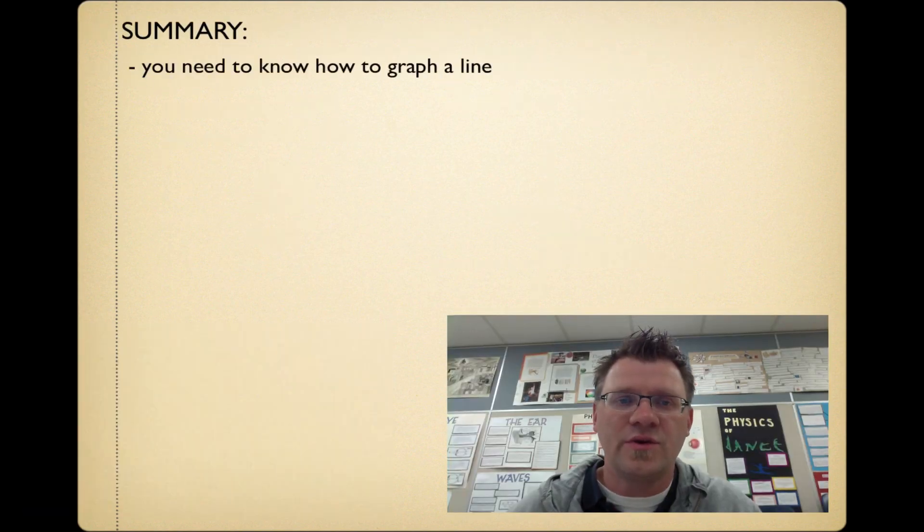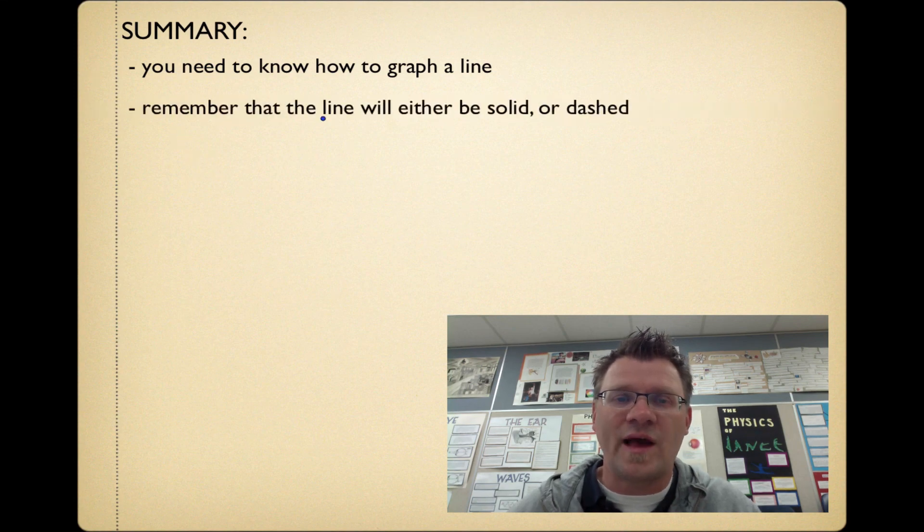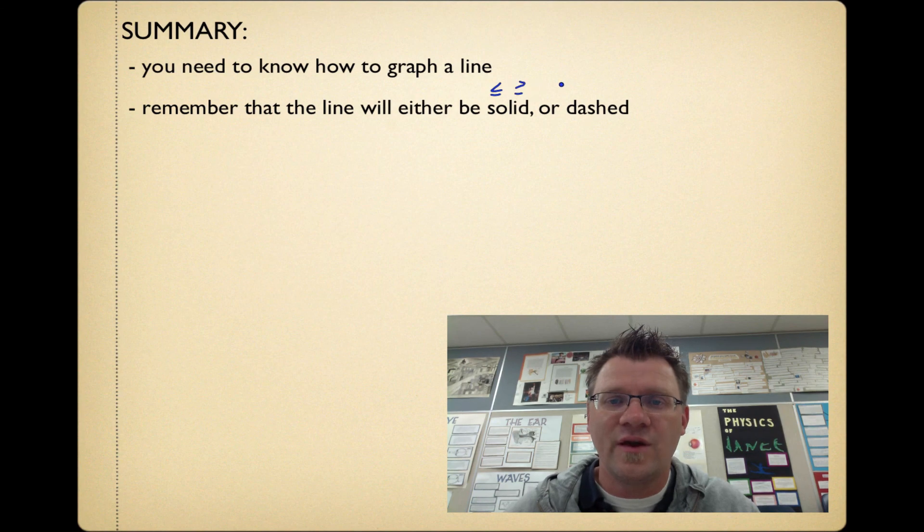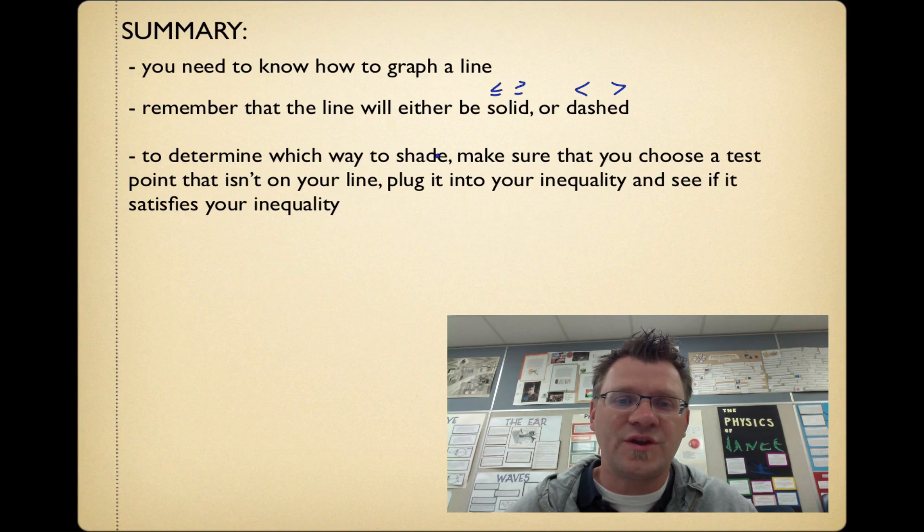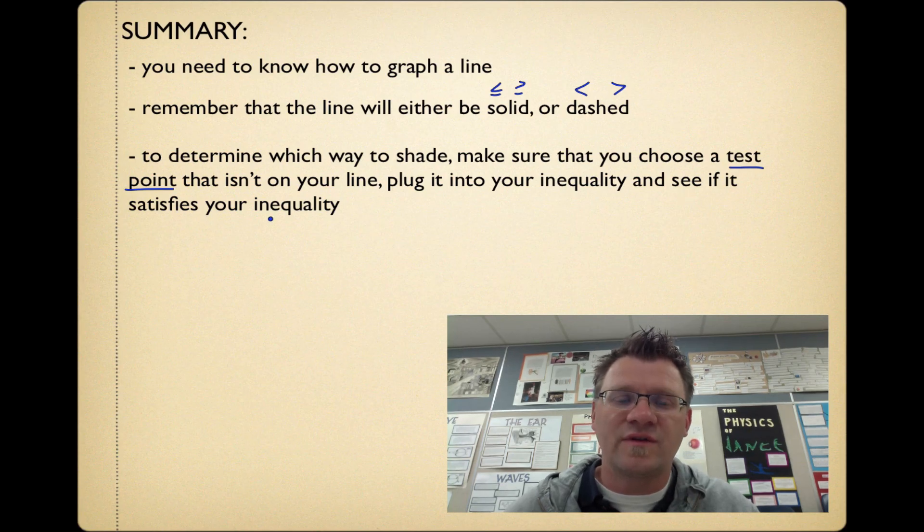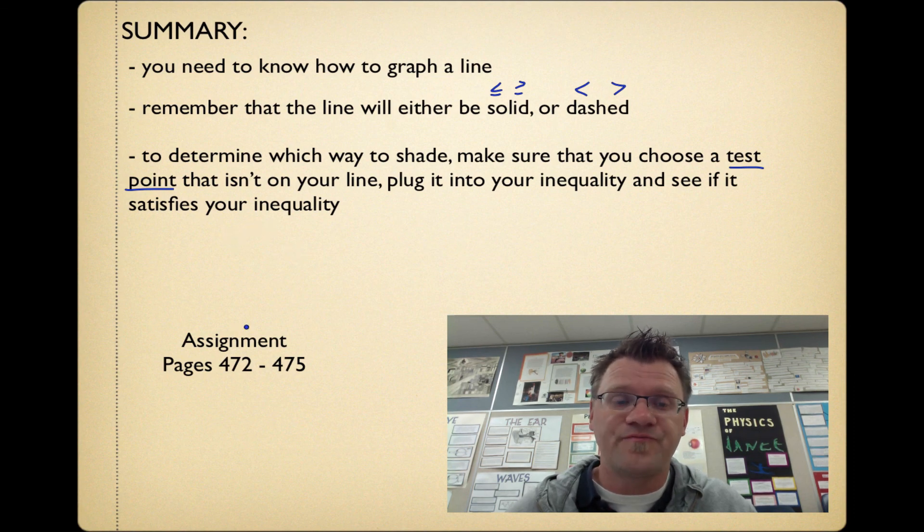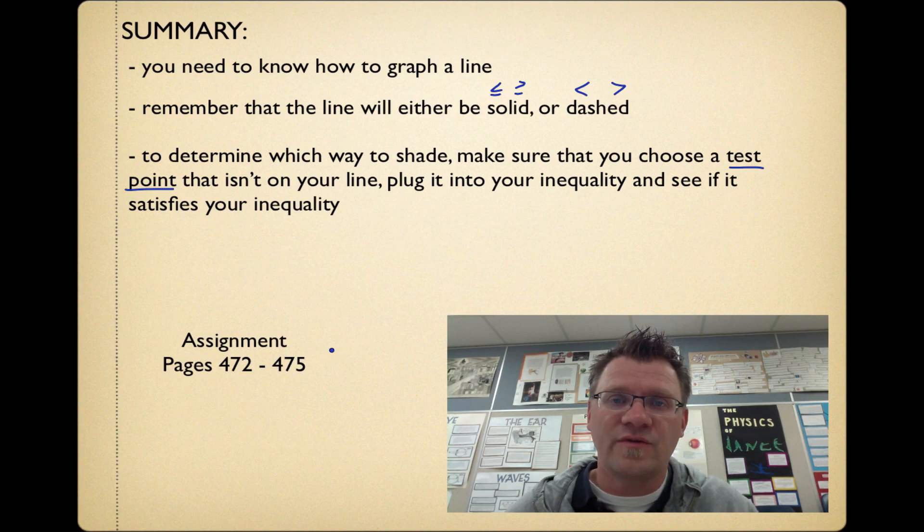In summary, you need to know how to graph a line. Once you do that, this thing becomes a whole lot easier. Remember that the line will either be solid if it's greater than or equal to or less than or equal to, or it might be a dashed line if it's just less than or greater than. To determine which way to shade, make sure that you choose a test point that isn't on your line. Plug it into your inequality and see if it satisfies that inequality. If it does, you'll shade towards that point. If it doesn't, you're going to shade away from it. Your assignment is on pages 472 to 475. Good luck, and we'll see you in class.